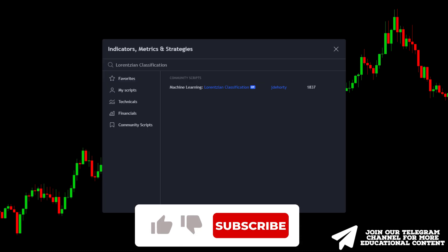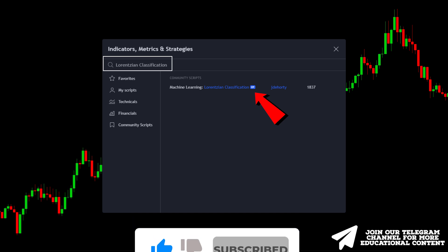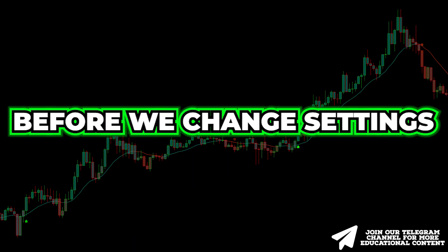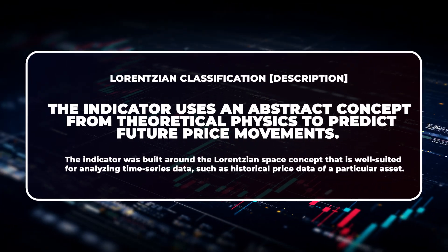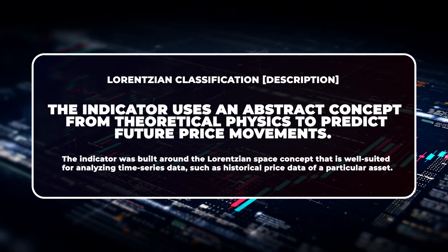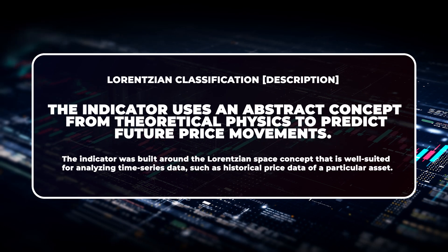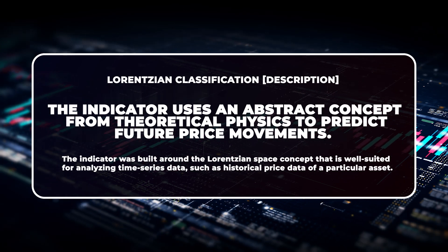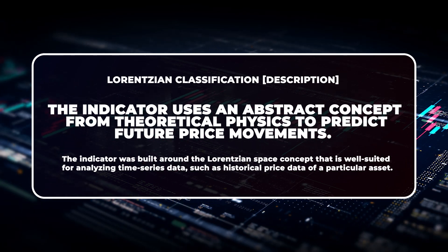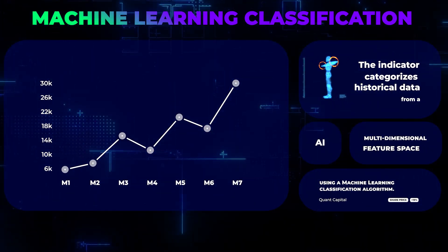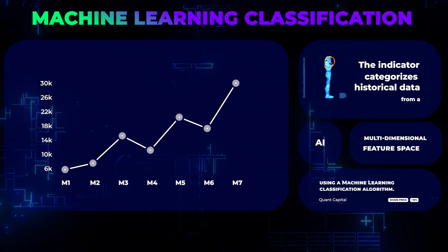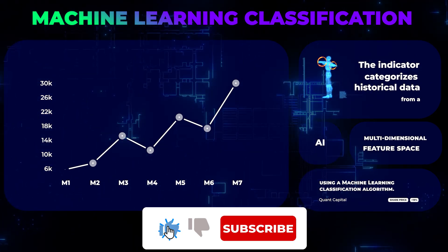Go to the indicators tab, type 'Lawrenson classification', and choose this exact indicator. Before we change settings, let's briefly overview this indicator. The indicator was built around the Lawrenson space concept that is well suited for analyzing time series data, such as historical price data of a particular asset.